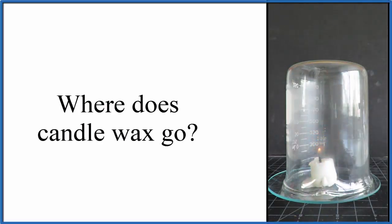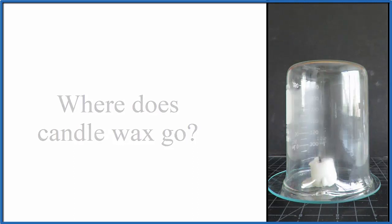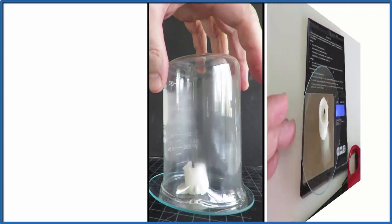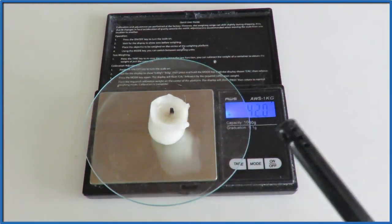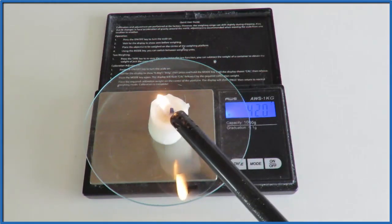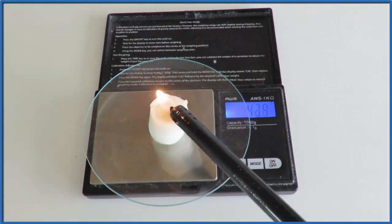In this video we'll answer the question: where does candle wax go? So we have a candle burning and we want to know where that wax goes. We know the candle gets smaller over time, but where does the wax go? One way we can check this is we can weigh a candle. So here we've weighed the candle on the watch glass there and see what happens over time.